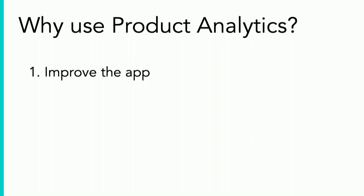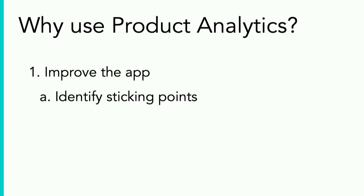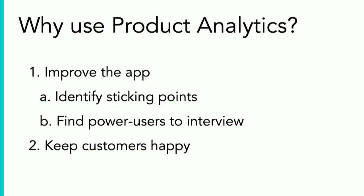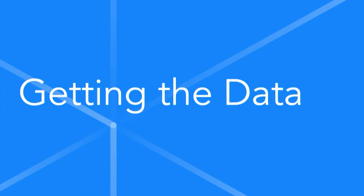Why do we want to use product analytics data? First, we can use it to improve the app. We can identify sticking points by following a user through a workflow — for example, did they complete a step but not hit the save button? We can also find power users of a new feature, contact them for early feedback, and make improvements. Ultimately, with a better app we keep customers happy, which leads to more revenue. This data is used by customer success managers, product managers, and product designers.